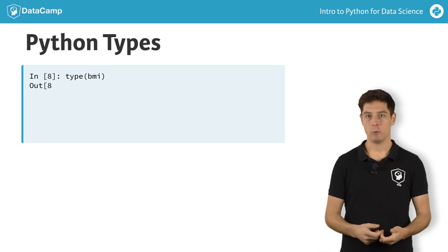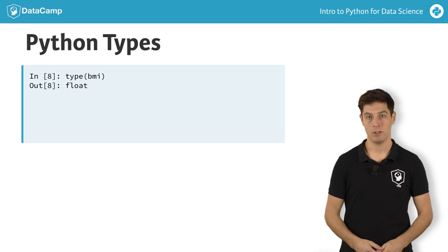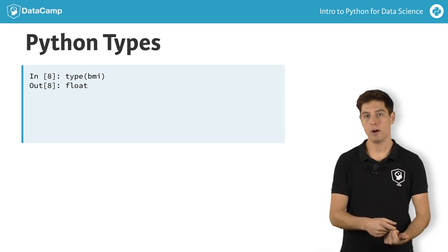You can see that it's a float, which is Python's way of representing a real number, so a number which can have both an integer part and a fractional part.